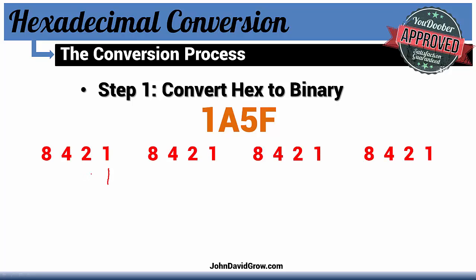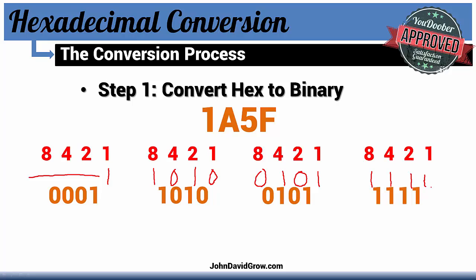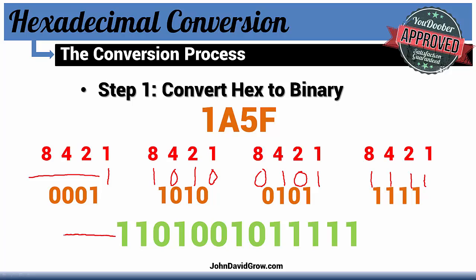We draw out our 4 nibble tables and just plug in the values. 1 is just 1 — fill the rest in with 0s. A, as you remember, is 10, so that's going to be a 1 here and a 1 here — 8 plus 2 — fill the rest in with 0s. 5: 4 plus 1 equals 5, fill the rest in with 0s. And then F, as you remember, is 15 — that's all 1s. Then we just combine them together. Note that leading 0s are left off here, and that's fine — we don't need them for the conversion, though depending on your application you may need them.